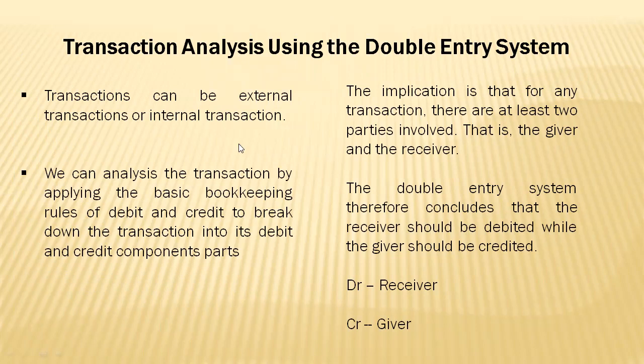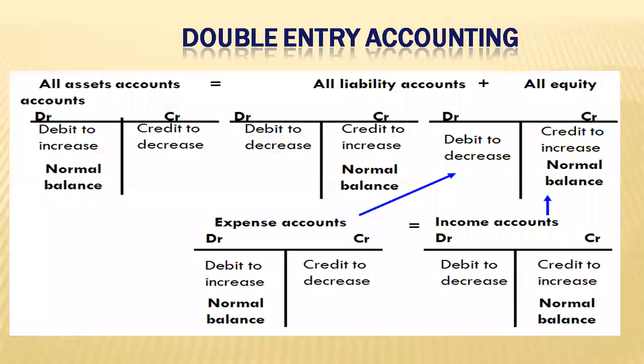We can analyze transactions by applying the double entry principles of debit and credit. There must be at least two parties involved in every transaction: the giver and the receiver. The double entry principle concludes that we should debit the receiver — whoever is receiving will be debited — while whoever is giving will be credited. Whoever is receiving is debited; whoever is giving is credited.